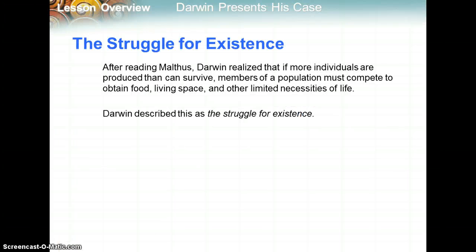After reading Malthus, the economist, where he was talking about population growth in the human population, Darwin realized that if more individuals are produced than can survive, members of a population must compete to obtain food, living space, and other limited necessities of life. Darwin described this as the struggle for existence.